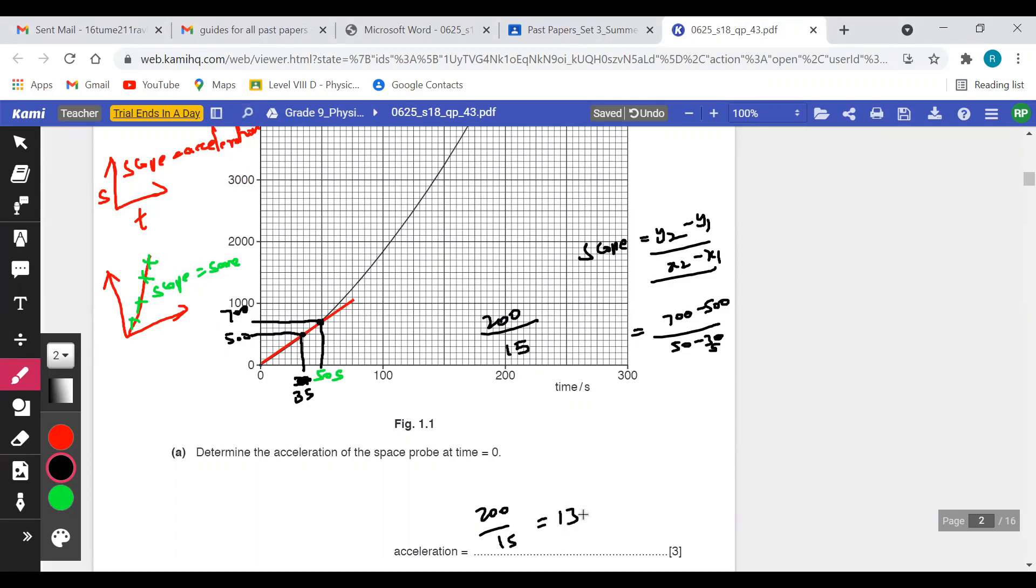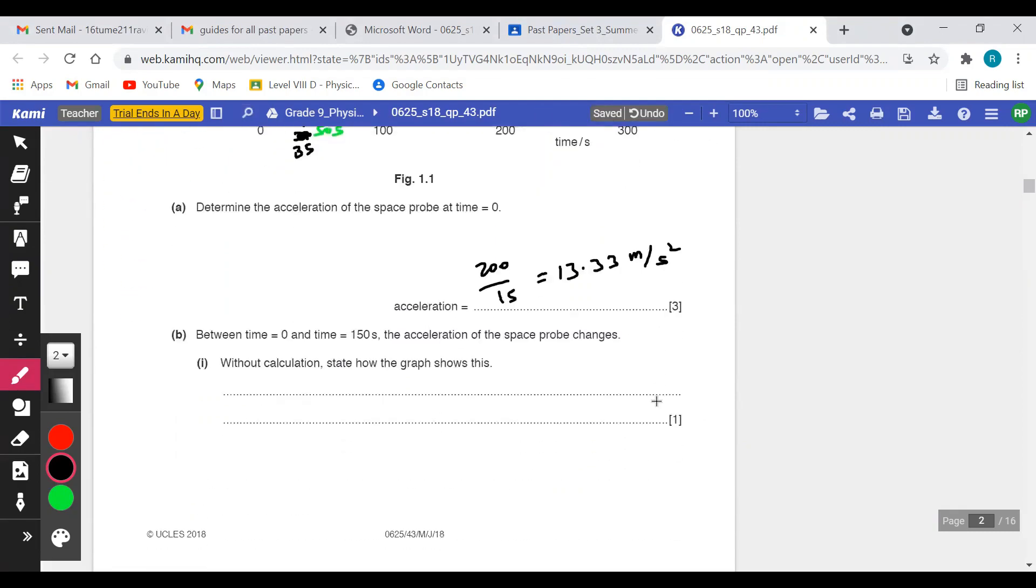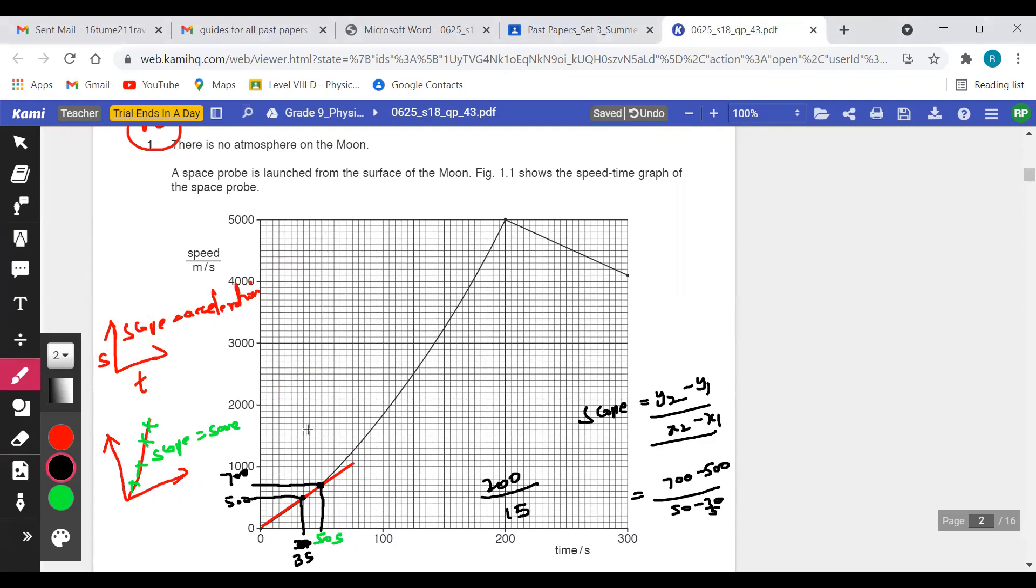Now hope you will be able to understand the question. From 0 to 50, it's uniform acceleration. From 50 to 150 over here, you can see that the slope is changing. Till 50 it's uniform acceleration, from 50 to 150 it is a non-uniform acceleration.